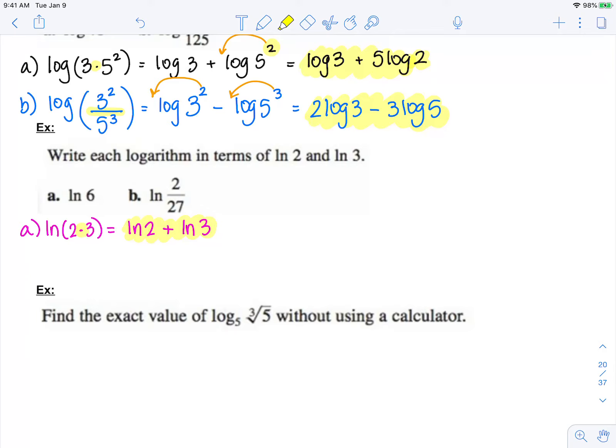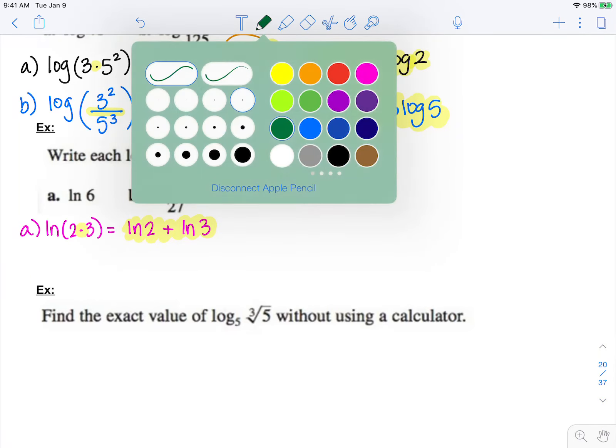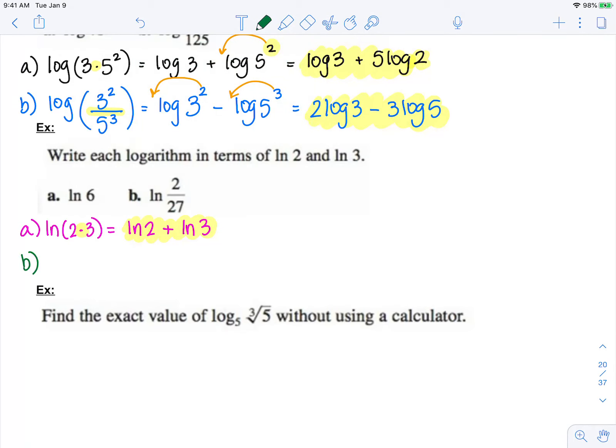Separate them into those two logs. But now in part B, I have ln of 2 over 27. So that's 2 over 3 cubed. Now to expand,